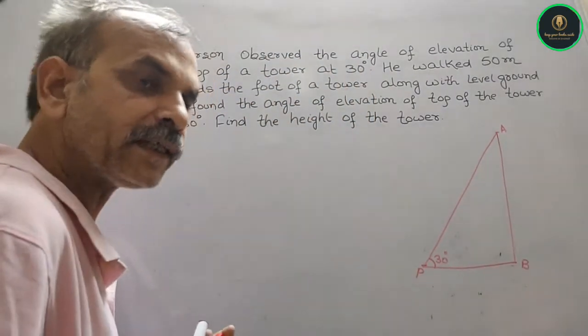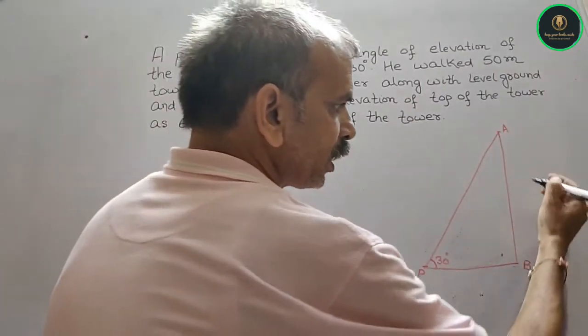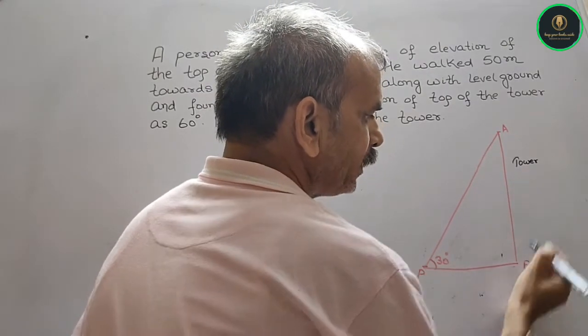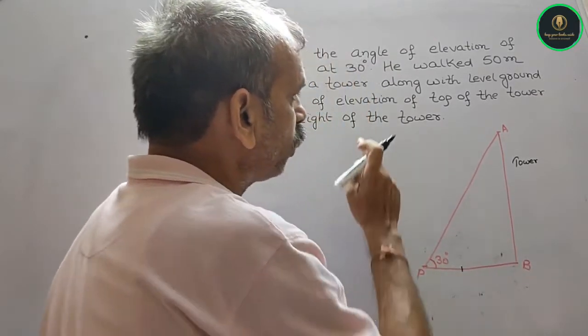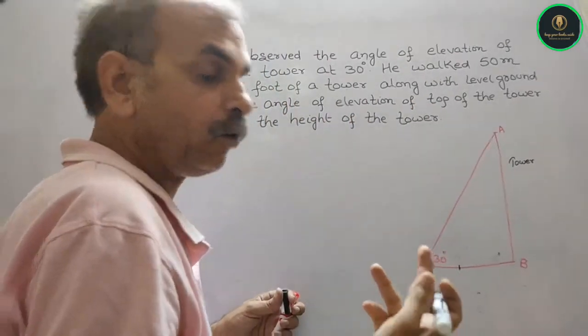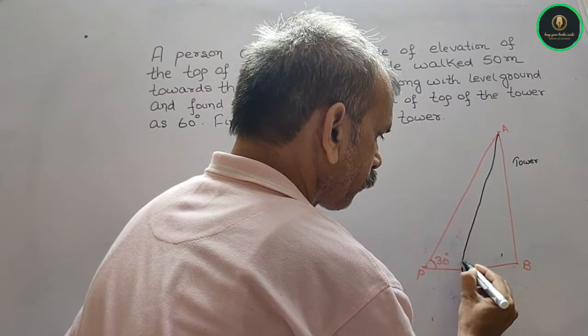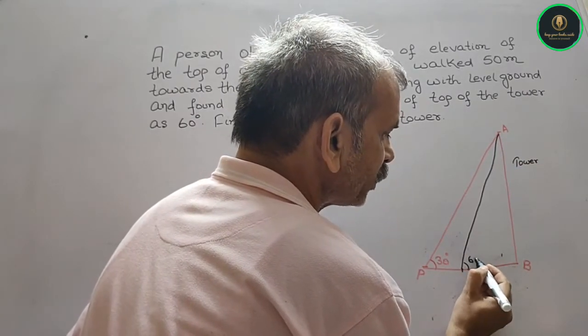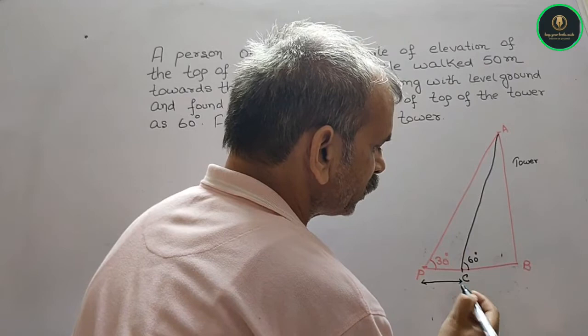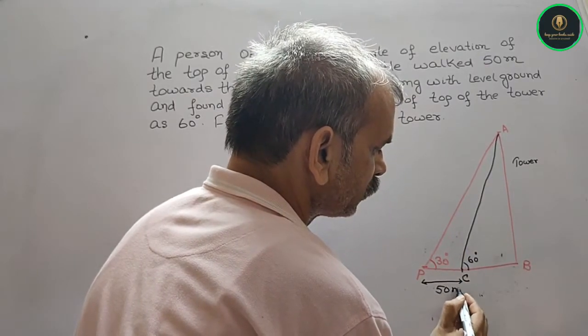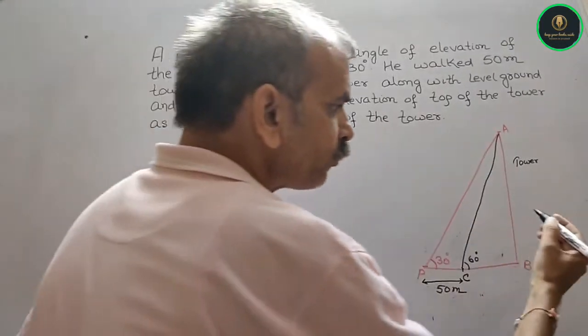Now he walked 50 meters towards the foot of the tower. The angle of elevation of the top of the tower is now 60 degrees. So this point is your C and the distance traveled is 50 meters. The question is to find the height of the tower, that means we have to find this edge.